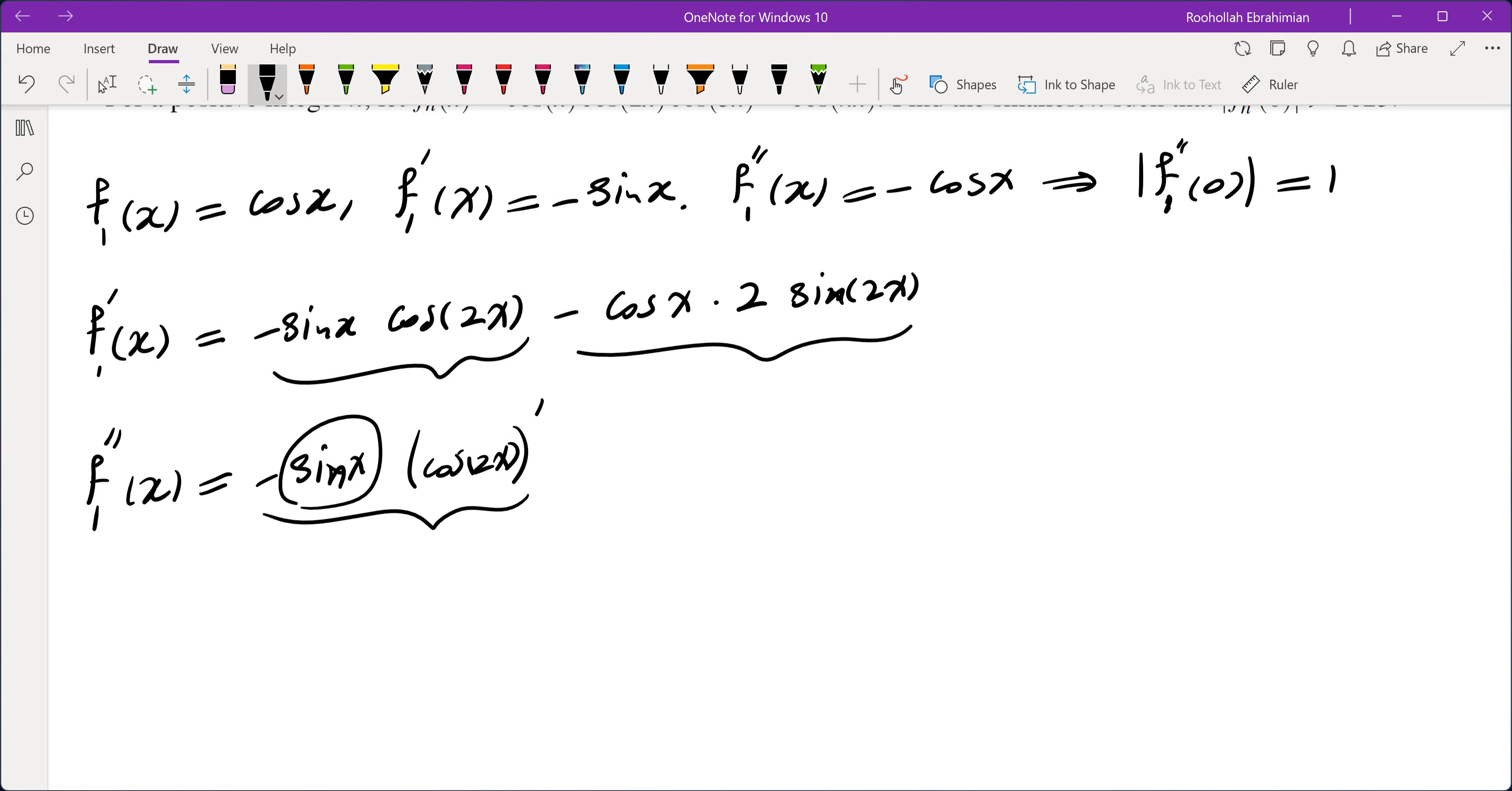When we take the derivative of the first one, we get negative cos(x) times cos(2x), which when we plug in 0 gives us 1. The second term becomes negative sin(x), if we take the derivative of that, we get plus sin(x) times 2 sin(2x).